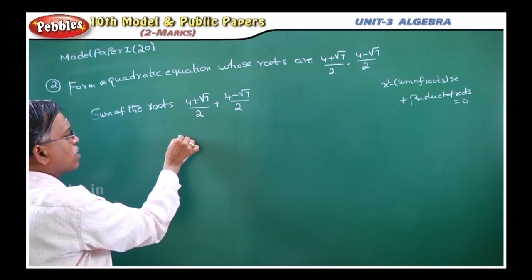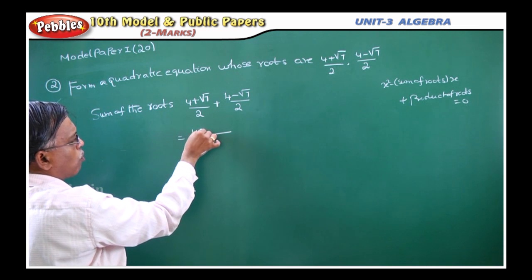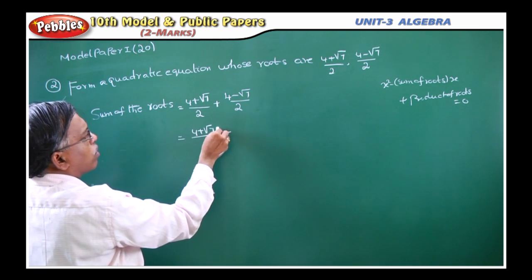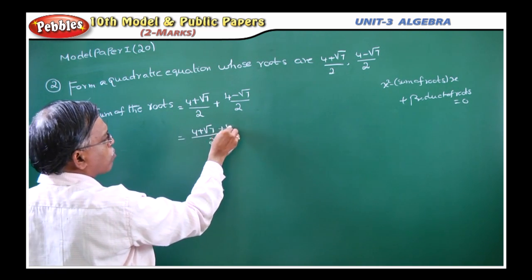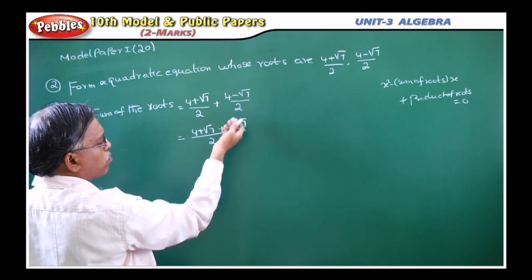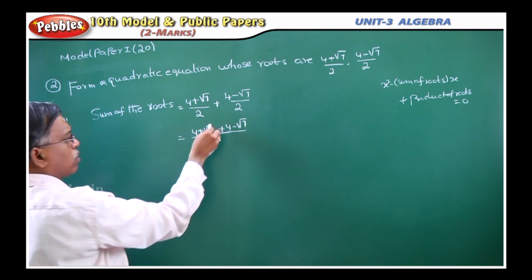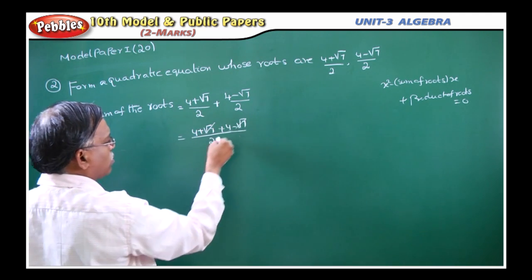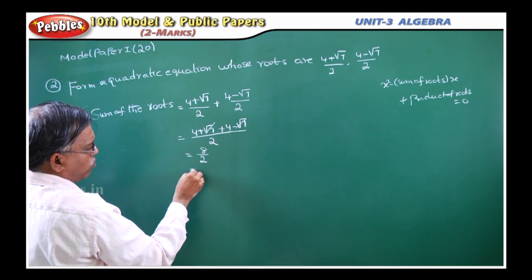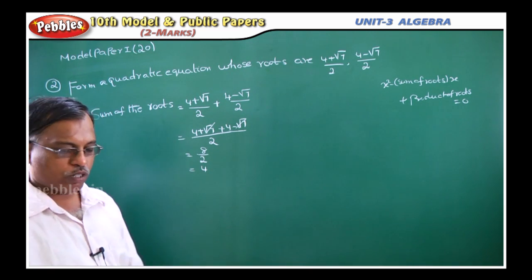Sum of the roots = (4 + √7)/2 + (4 - √7)/2. Taking the LCM, which is 2, we get (4 + √7 + 4 - √7) / 2. The √7 terms cancel, leaving 4 + 4 = 8, so 8/2 = 4. That is your sum of the roots.